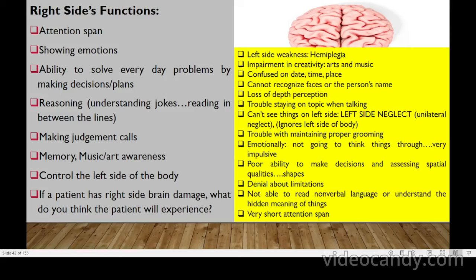With right-sided brain damage, the patient will have left-sided weakness, impaired creativity, confusion recognizing faces, loss of depth perception, difficulty staying on topic, inability to see things on the left side (left-side neglect), impaired grooming, impulsiveness, poor decision-making, denial of limitations, inability to read nonverbal language, and very short attention span.